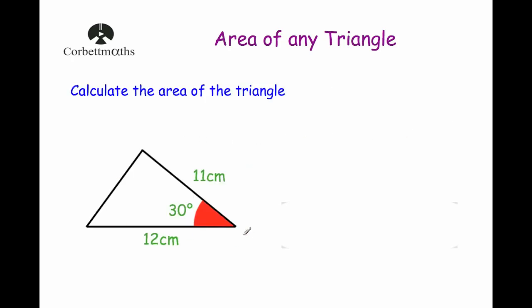Our first example, we've got this triangle and the question says calculate the area of the triangle. So we've got the sides: this side's got a length of 11 centimeters, this side's got a length of 12 centimeters, and the angle between them has got an angle size of 30 degrees. That means we can work out the area of this triangle because we've got the two sides and the angle between them.